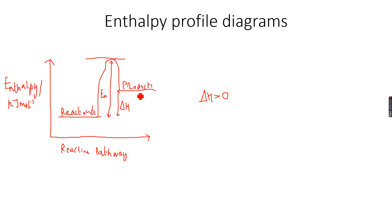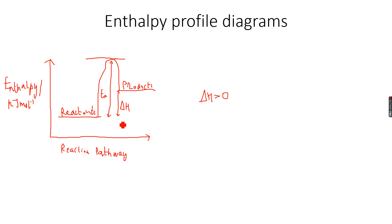Activation energy is basically the energy needed to initiate a reaction. The energy needed to initiate this reaction is Ea, which is this energy difference. Delta H is the enthalpy change; Ea is the activation energy.